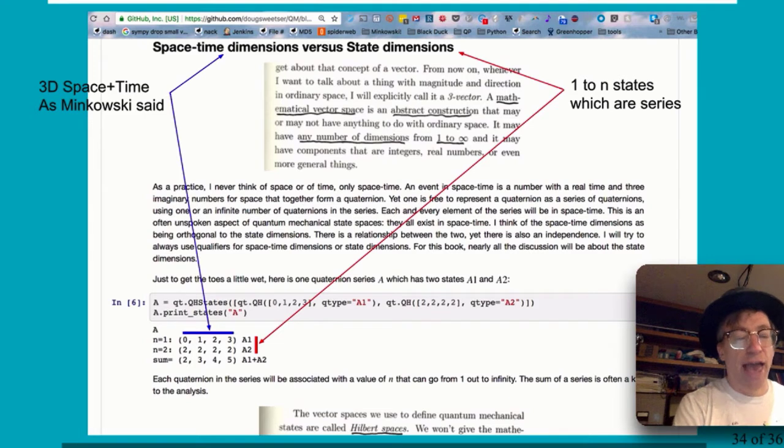In fact, when dealing with quantum mechanics, you're almost always talking about state dimensions. But you're always working with space-time dimensions because you always see those four in blue. They're always there, and then it's just a question of how many states you have.